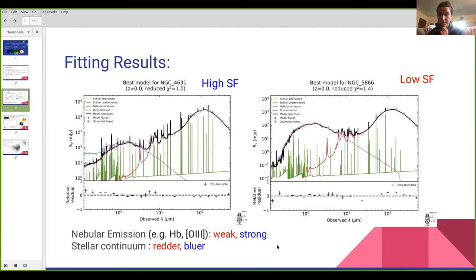This slide shows two example results from the CIGALE fitting. We see galaxy NGC 4631, which has a reduced chi-squared of one, which is about the target chi-squared that we want. We also have the best model for NGC 5866, with a reduced chi-squared of about 1.4, which is still good.